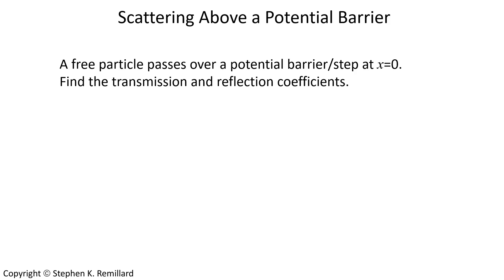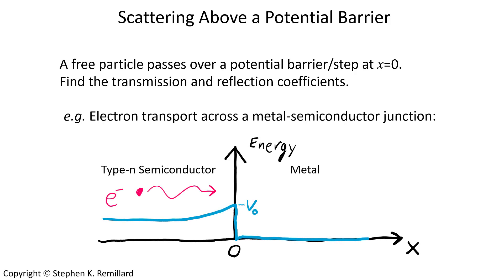There are several problems in physics and engineering where a wave encounters a sudden change in potential energy. One example is a classic problem of an ohmic contact between a metal and a semiconductor. An electron incident on the interface between the two encounters a sudden change in potential energy. If it is propagating from left to right, it is going to encounter a sudden increase in its kinetic energy because of a sudden decrease in its potential energy.